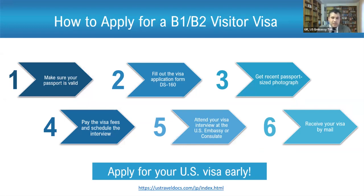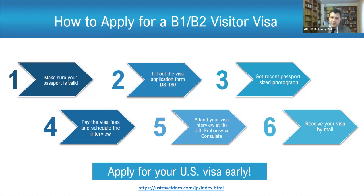If you need to apply for a visa, first make sure you have a valid passport. Then fill out form DS-160, which requires a passport-size photo with a white background — not blue, which Japan uses. Remove your glasses and use a neutral facial expression for the photo. Pay the $160 visa application fee and schedule your interview. If approved, you'll get your visa by mail or can pick it up — usually about a week after the interview. Apply early because you never know what extra documents or processing might be needed, especially as we go into the busy summer season.